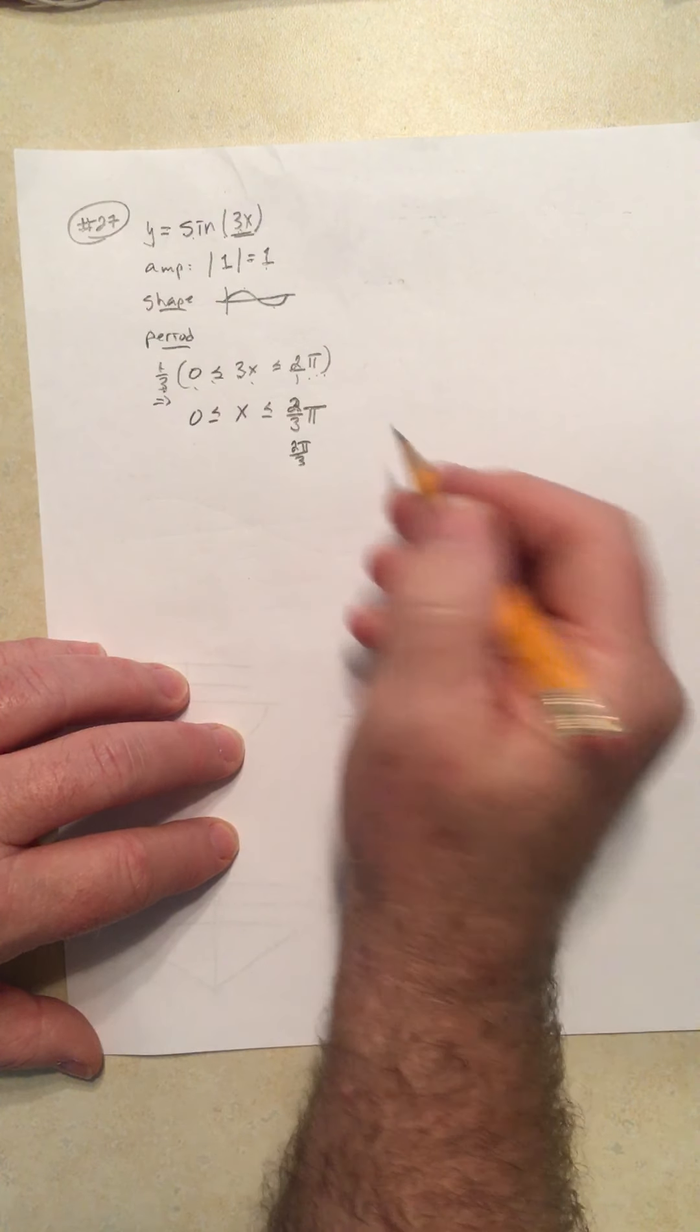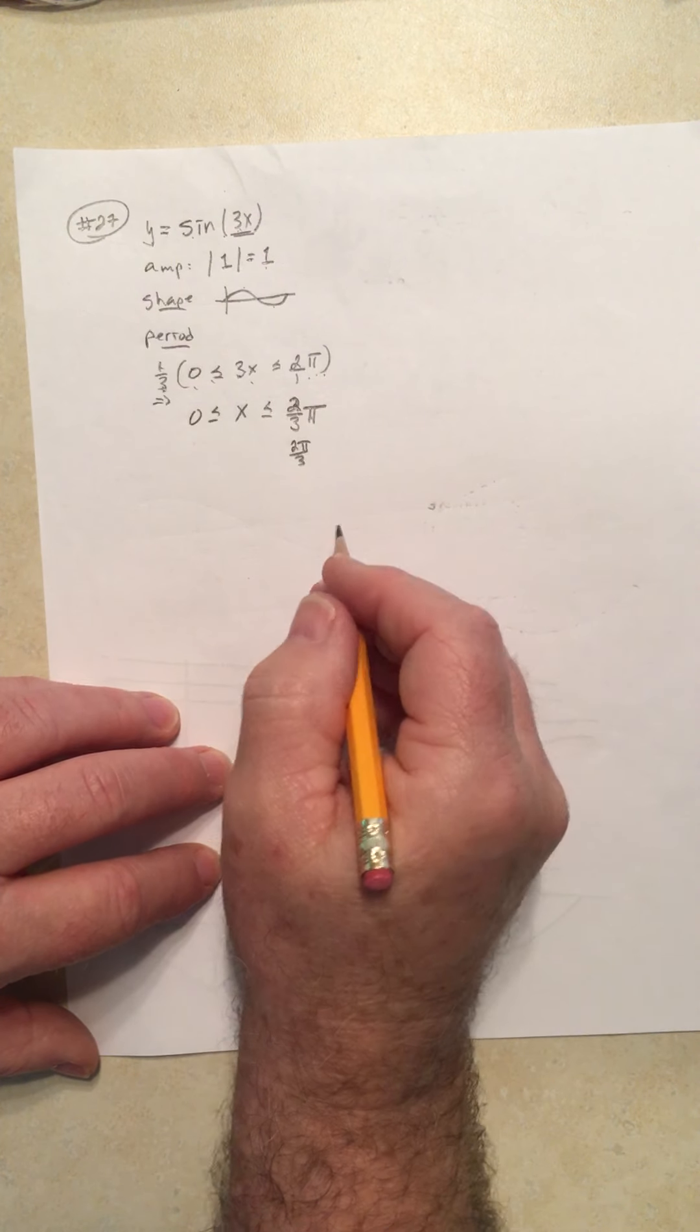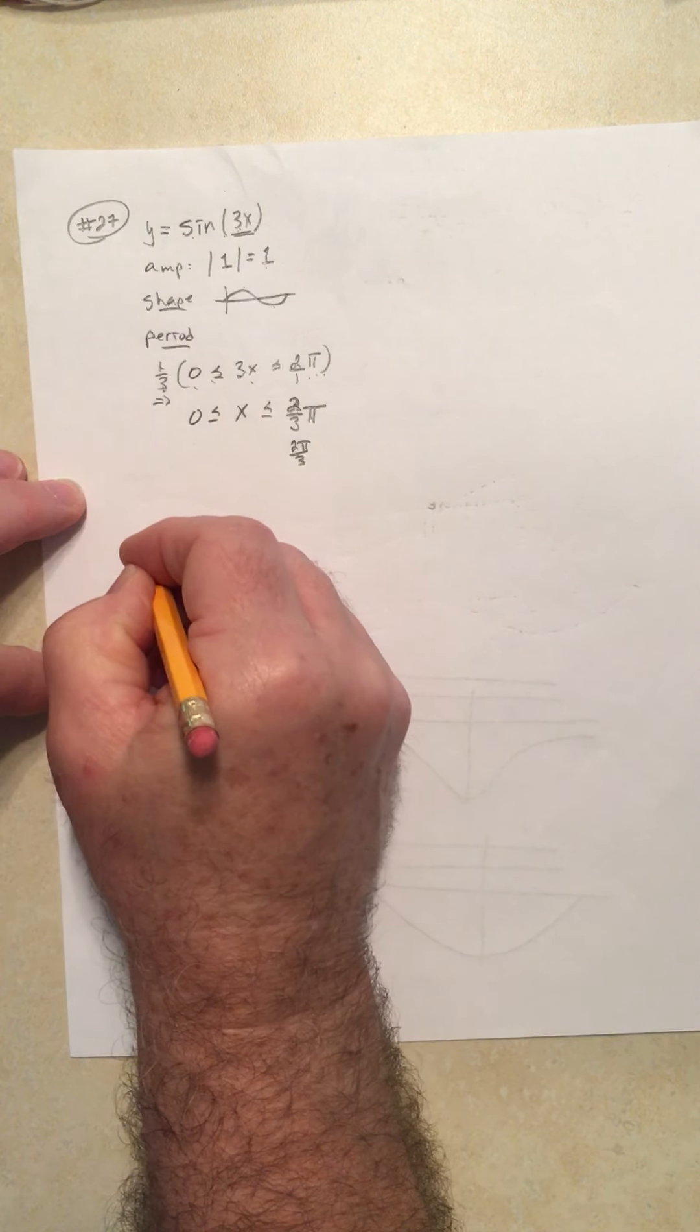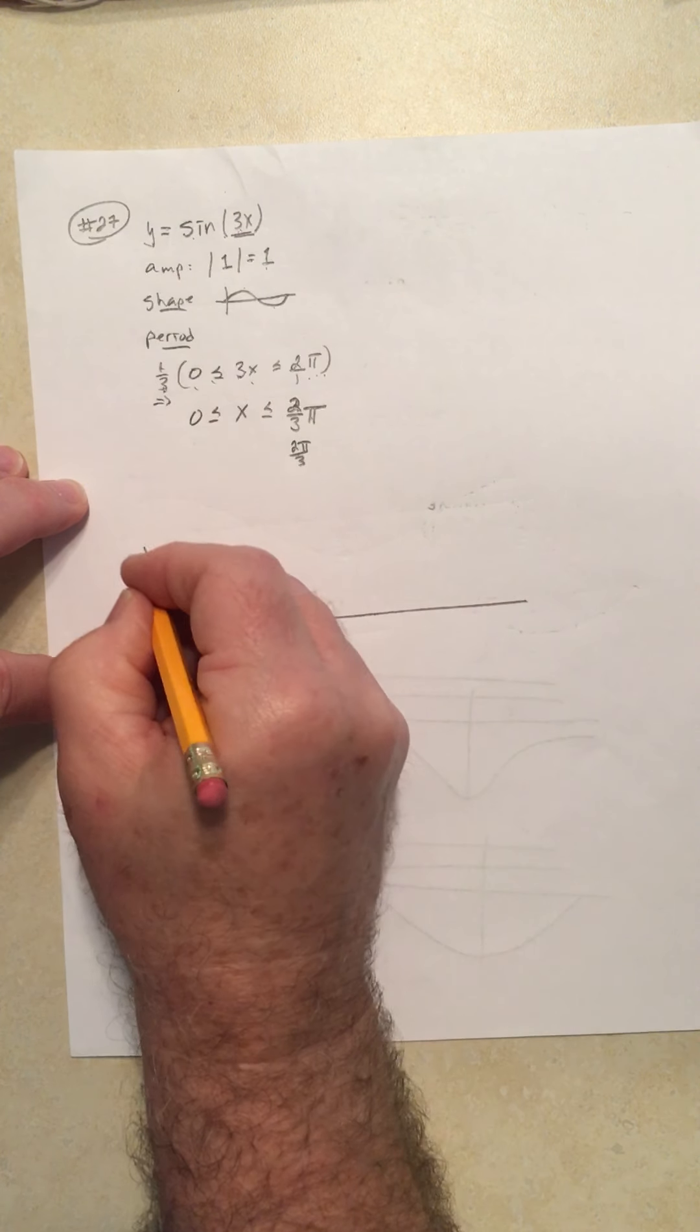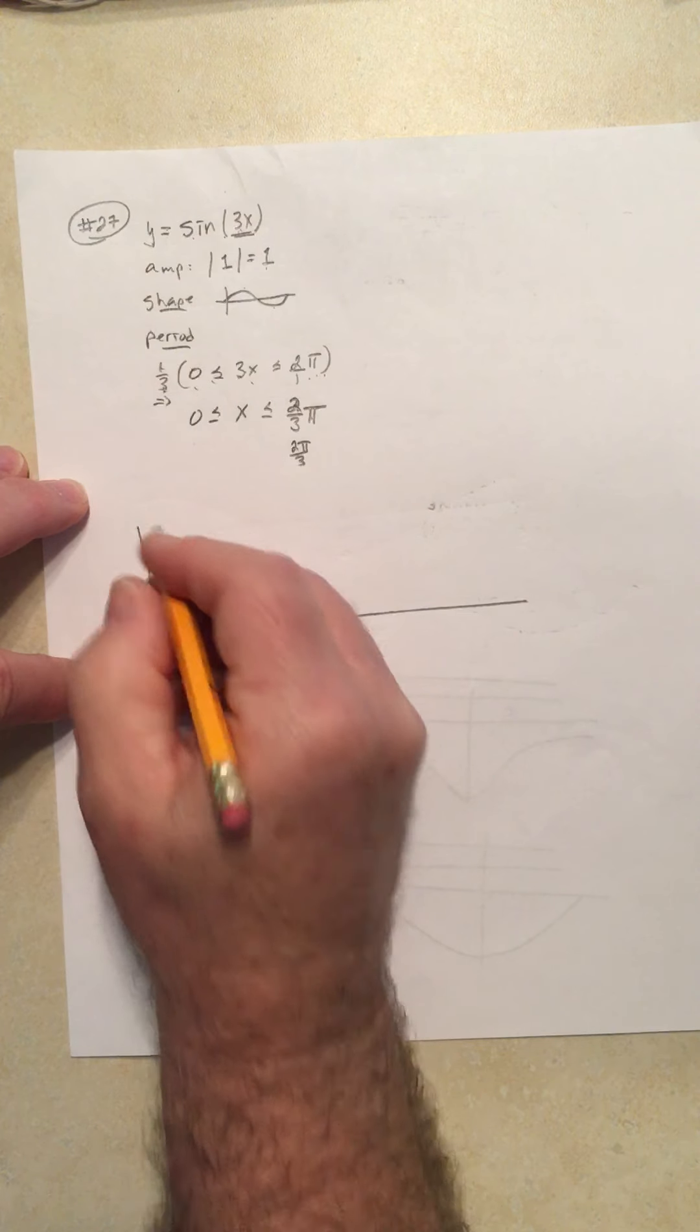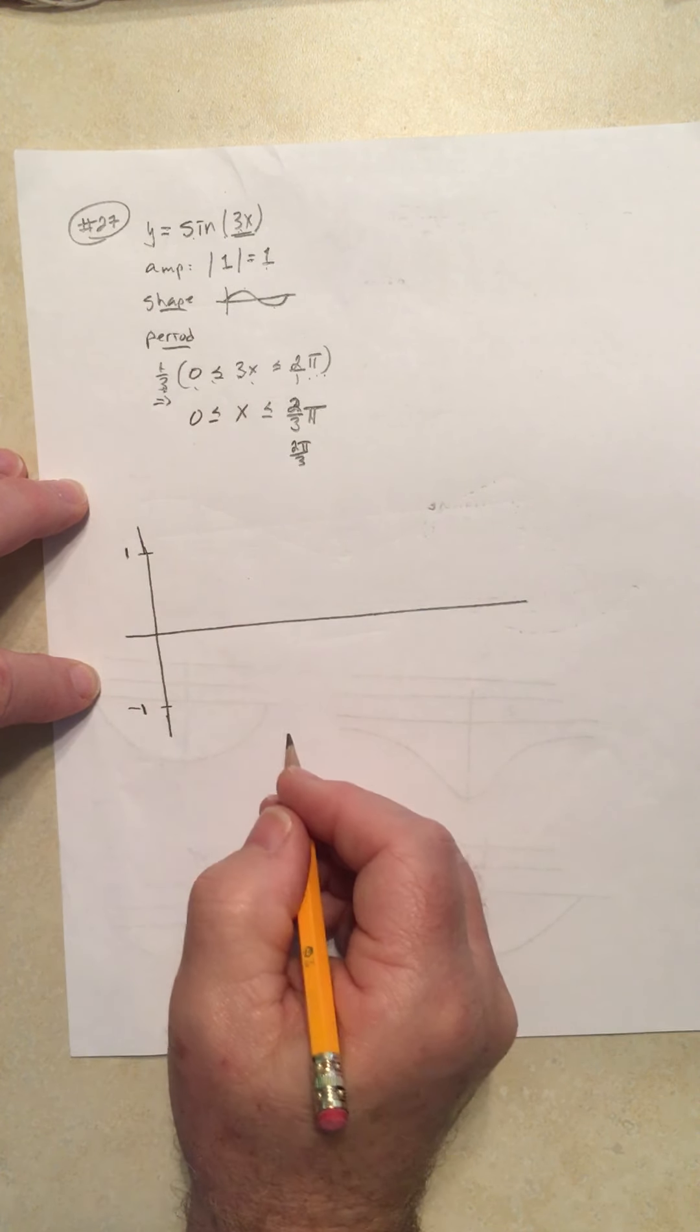Whichever way you like to write that is fine. 2/3 π or 2π over 3 is the same. Alright, so I want to make this a little bit larger than the previous ones because this graph is kind of scrunched together. Here's 1, negative 1.